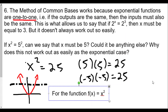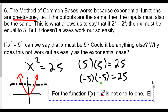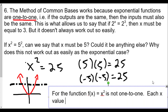For example, f of x equals x squared is not one-to-one. Each x value does have only one y value.